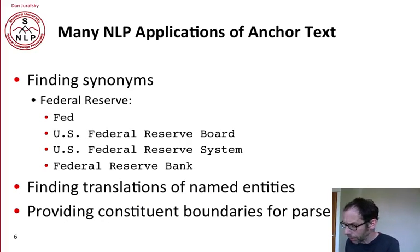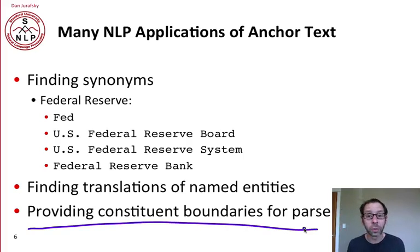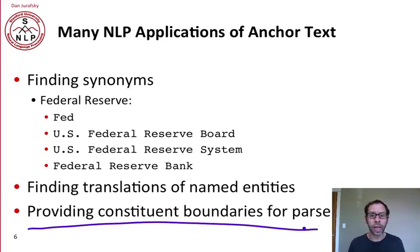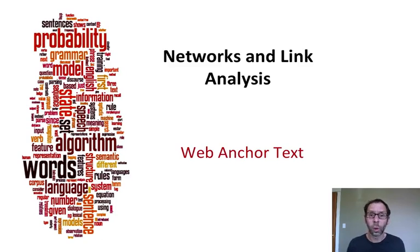Even inside a page, anchor text can help by providing constituency boundaries for parsers. Anchor text often describes a noun phrase, so by looking at the boundaries of anchor text, that can help parsers do a better job parsing the sentence the anchor text is in. Web anchor text is very useful both in indexing and in other language processing applications.